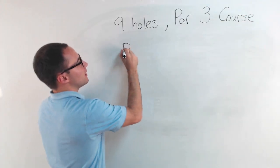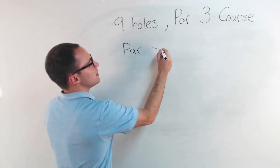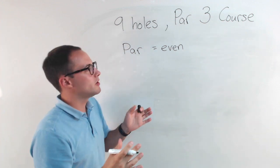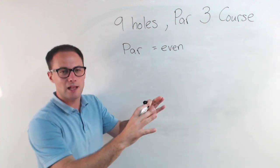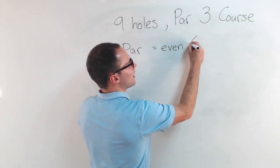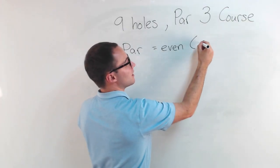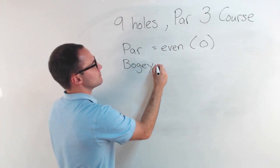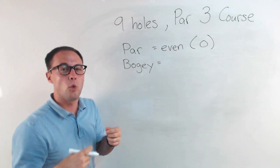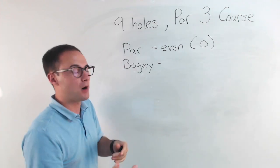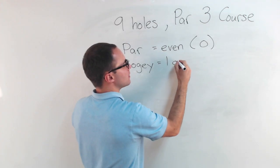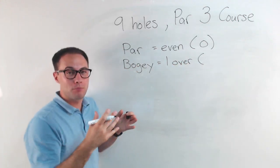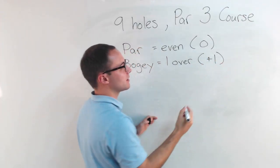So a par equals even — you're not above par, you're not below par, you're exactly what you were supposed to be. We can represent that with an integer of zero. A bogey means you were one stroke over par, and we can represent that with a positive one.